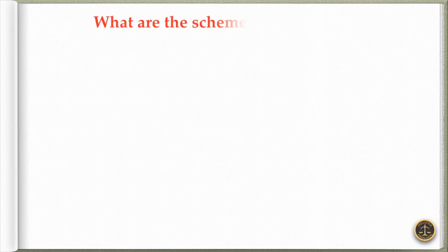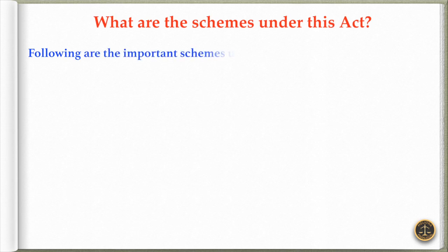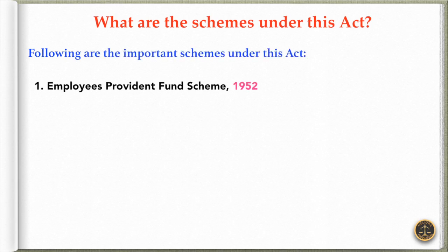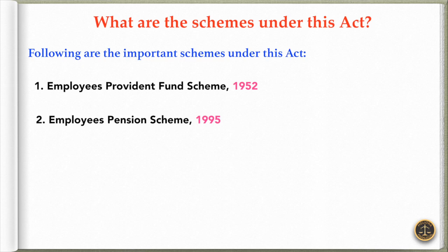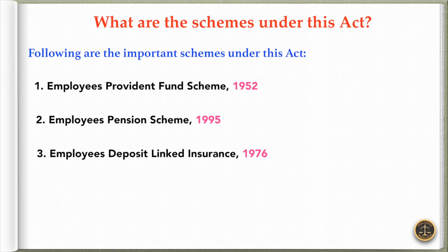Now, the question is: what are the schemes under this act? Following are the important schemes under this act: Employees Provident Fund Scheme 1952, Employees Pension Scheme 1995, and Employees Deposit Linked Insurance Scheme 1976. Now let's check out each of them in brief.